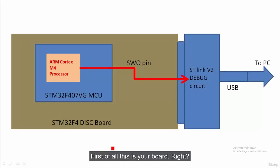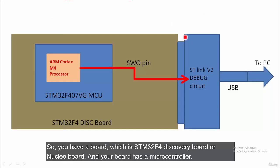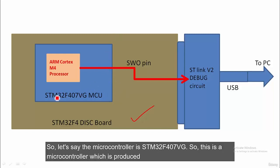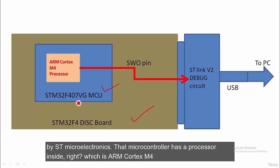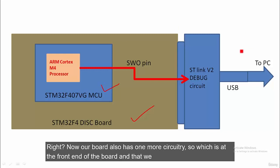Let's explore more. You have a board — for example, the STM32F4 Discovery board or a Nucleo board — which has a microcontroller such as the STM32F407VG produced by STMicroelectronics. That microcontroller has a processor inside: the ARM Cortex M4 processor.